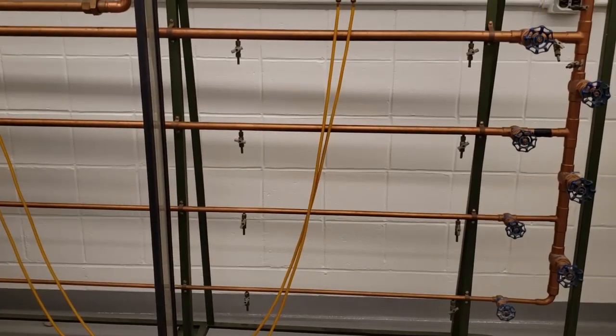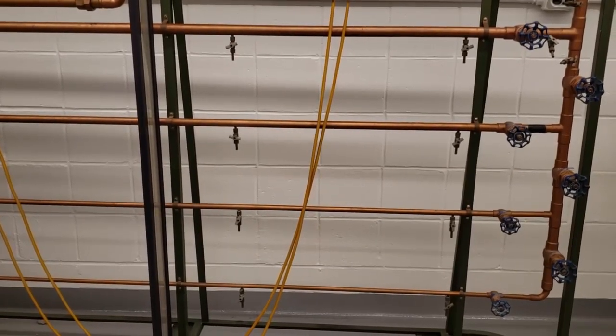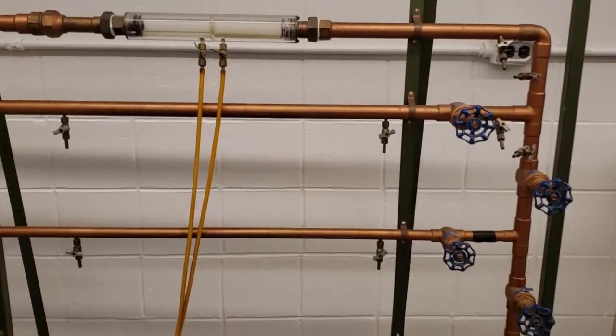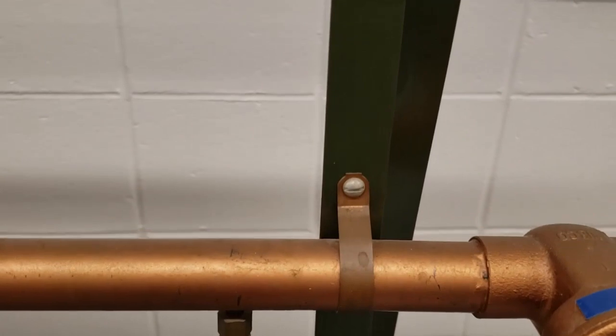Last is experiment number seven, where we determine the head loss in the diameters of four pipes. The first is a one inch pipe, which is seen here, and you can see the one inch labeling.